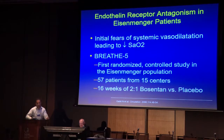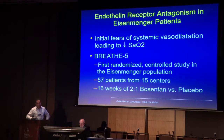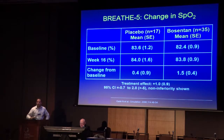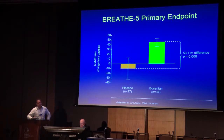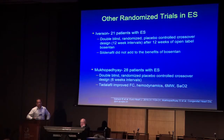There were initial fears from experts that systemic vasodilatation might occur, since these drugs are not specific for the pulmonary vasculature. The BREATHE-5 study was the first randomized controlled study in an Eisenmenger population — 57 patients from 15 centers, randomized two-to-one to the endothelin antagonist bosentan versus placebo. The primary endpoint showed the drug did not worsen oxygenation, and there was a significant improvement in six-minute walk distance.